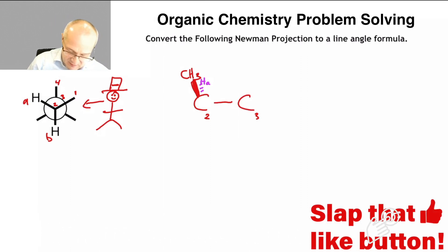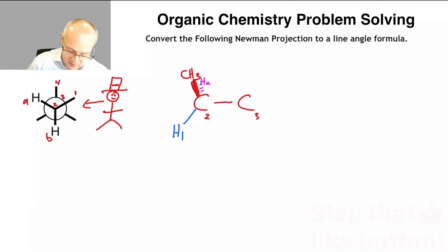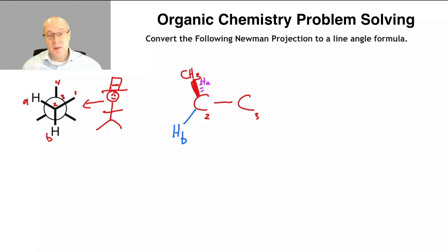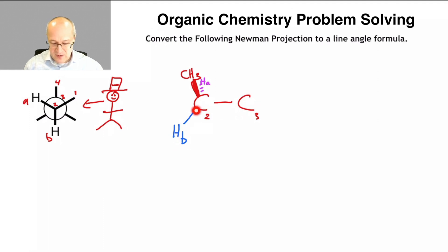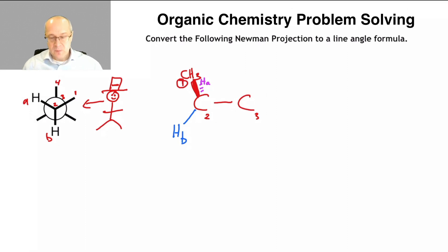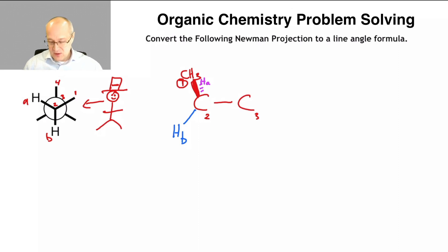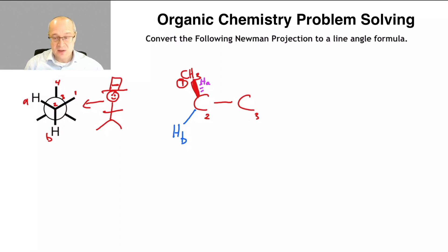H-B is straight down and in the same plane as these two carbons — that's why I drew it right there. And this, by the way, is carbon number one. Carbon number four, from my point of view, is in the same plane as H-B and these two carbons.